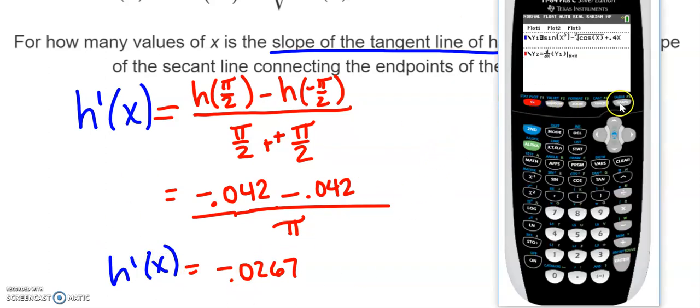So I am looking for where or how many times my derivative equals -0.0267. Going back to my y equals, this time I'm going to turn off my h(x) function and turn on my derivative function. This y2 means that I am taking the derivative with respect to x of what I have listed in y1, which is my original h function. And I want to know where is that going to be equal to -0.0267.